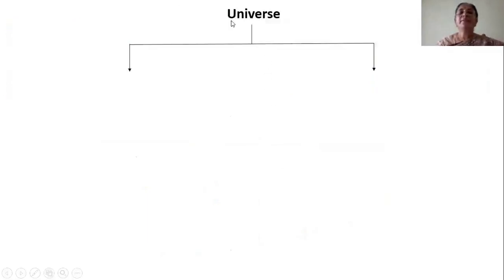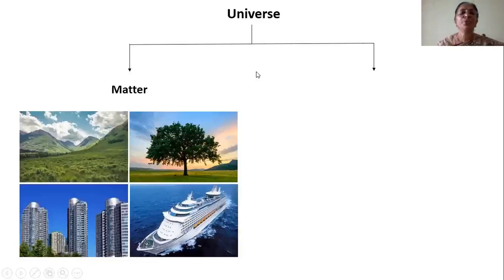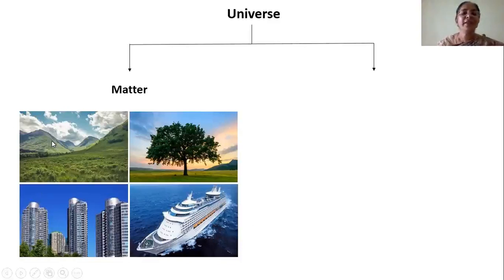Now let us imagine the universe — what it is made up of. Whatever you see in the universe, it can be categorized into two. One is matter: hills, valleys, clouds, trees, buildings, ships, ocean — whatever it may be, everything is made up of matter. Rocky material makes the hill. Leaves, buildings made up of bricks, ships made up of material, the ocean — water made up of molecules. So whatever you see in the universe, in one form, is in the form of matter.